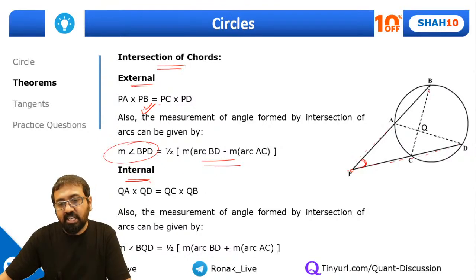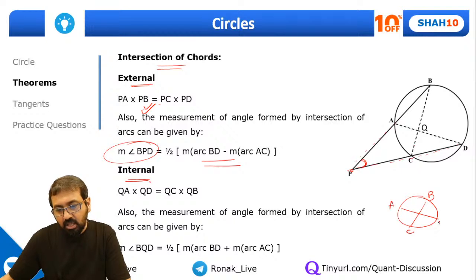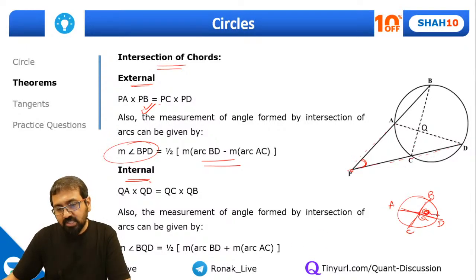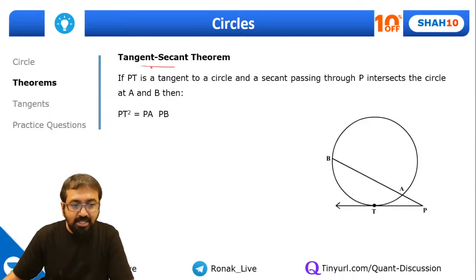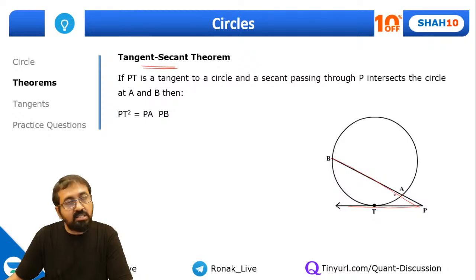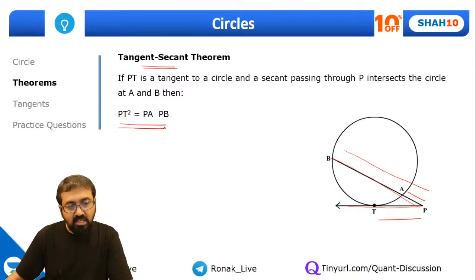For the tangent-secant theorem: if from external point P we draw one tangent PT and one secant PB (cutting the circle at A and B), then PT² = PA × PB. This is an important result. Now, the alternate segment theorem: when you draw a chord BC and a tangent CD meeting at point C, the angle between the chord and the tangent equals the angle made by the same chord at any point on the circumference on the other side.